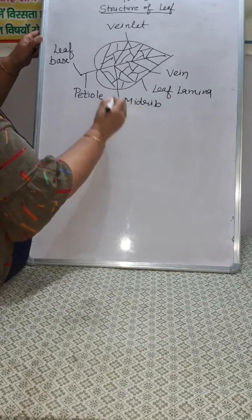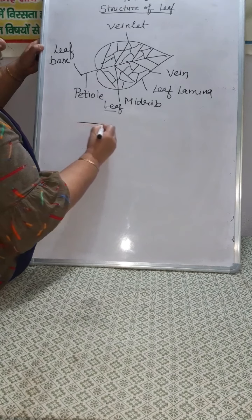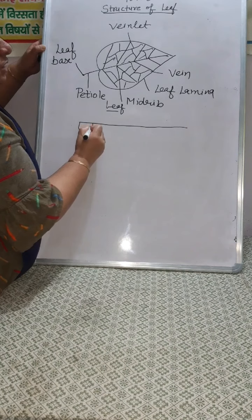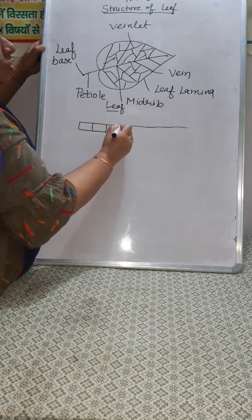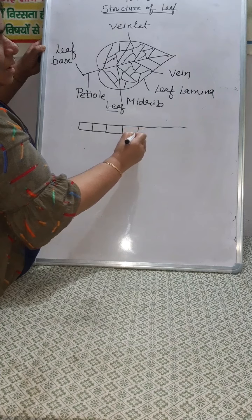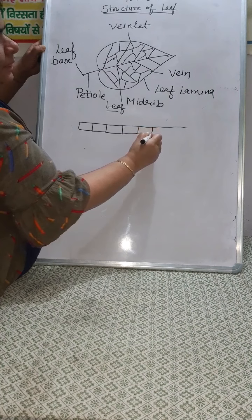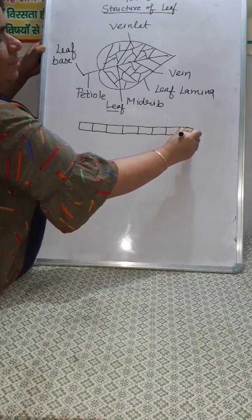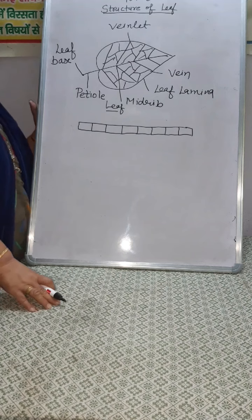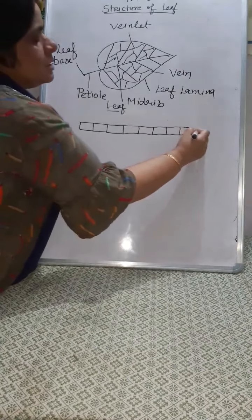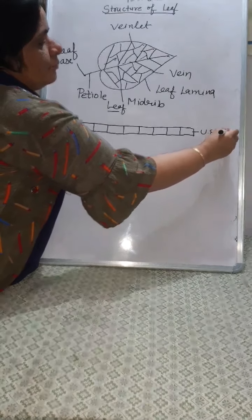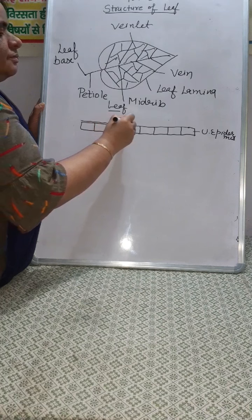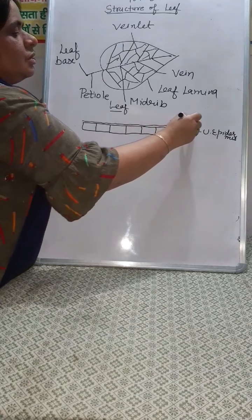If we cut the cross-section of the leaf, then the upper layer consists of closely associated cells. These closely associated cells are called the upper epidermis. In these cells there is no gap, because they help in protection — and when there is protection, there is no gap. Above the upper epidermis there is present a waxy layer called the cuticle.